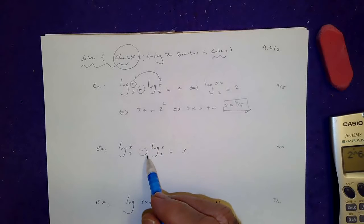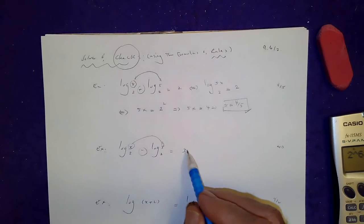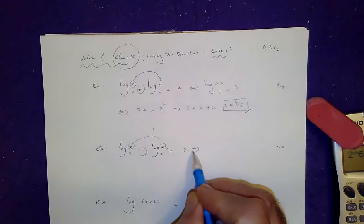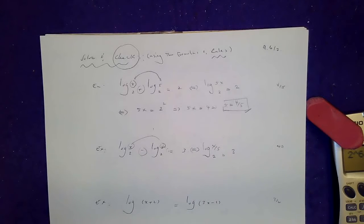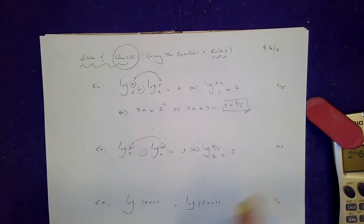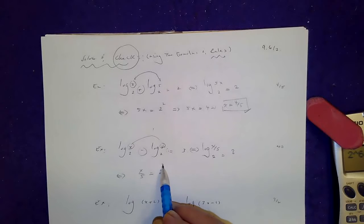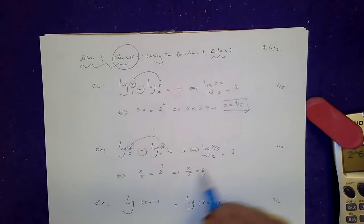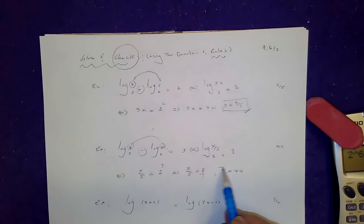Subtraction of logs comes from the quotient rule, so divide the first logarand by the second. That gives a single log of x divided by 5, base 2, equals 3. Convert to exponential form: x over 5 equals 2 to the 3, which is 8. Cross-multiplying gives x equals 40. And 40 doesn't make the logarand negative, so it's good to go.